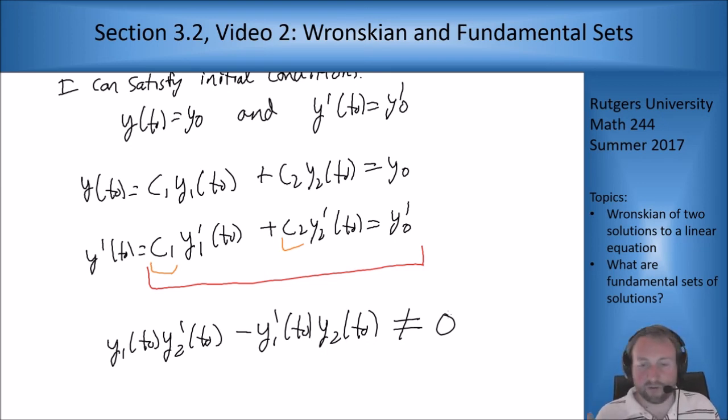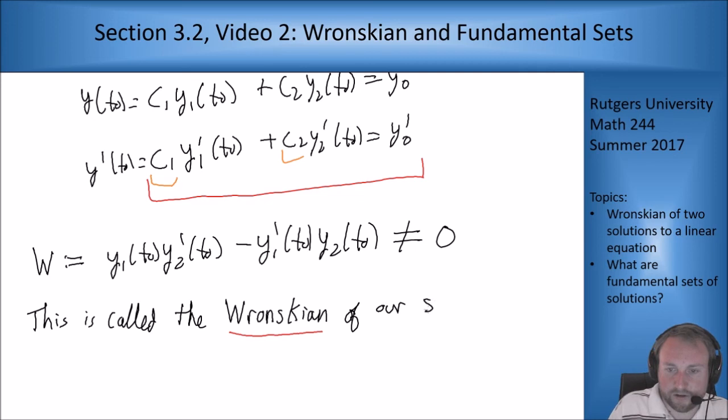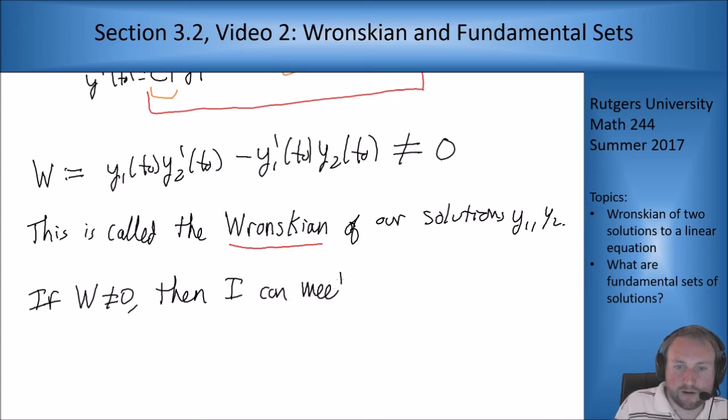Now this thing is so important that we give it a name. It's usually given the letter w and it's called the Wronskian of our two solutions y1 and y2. So the result we see here is that if w is not 0 then I can meet any initial conditions.